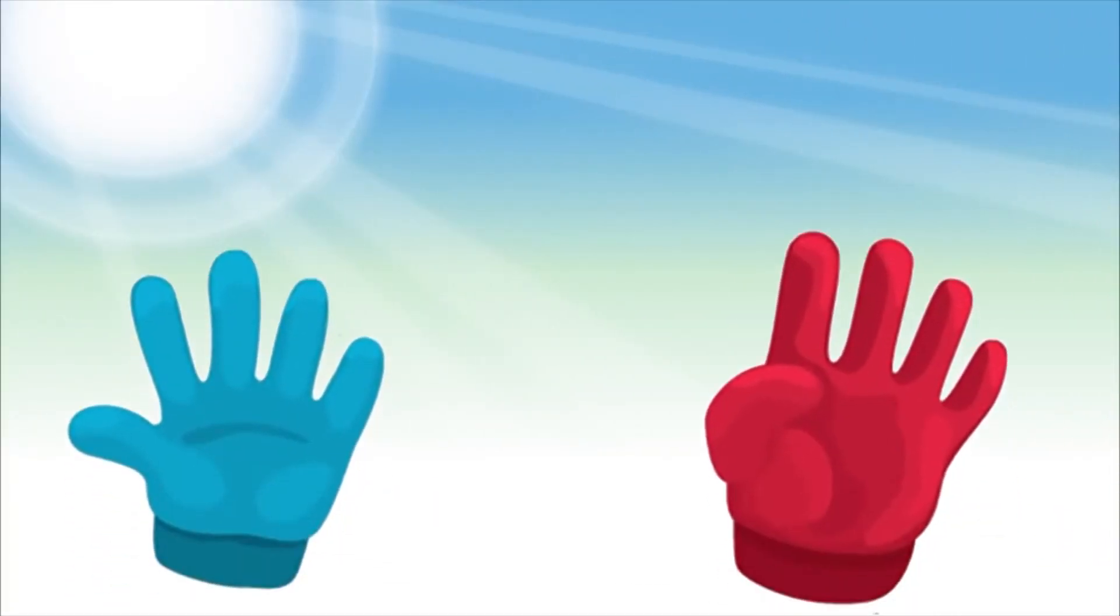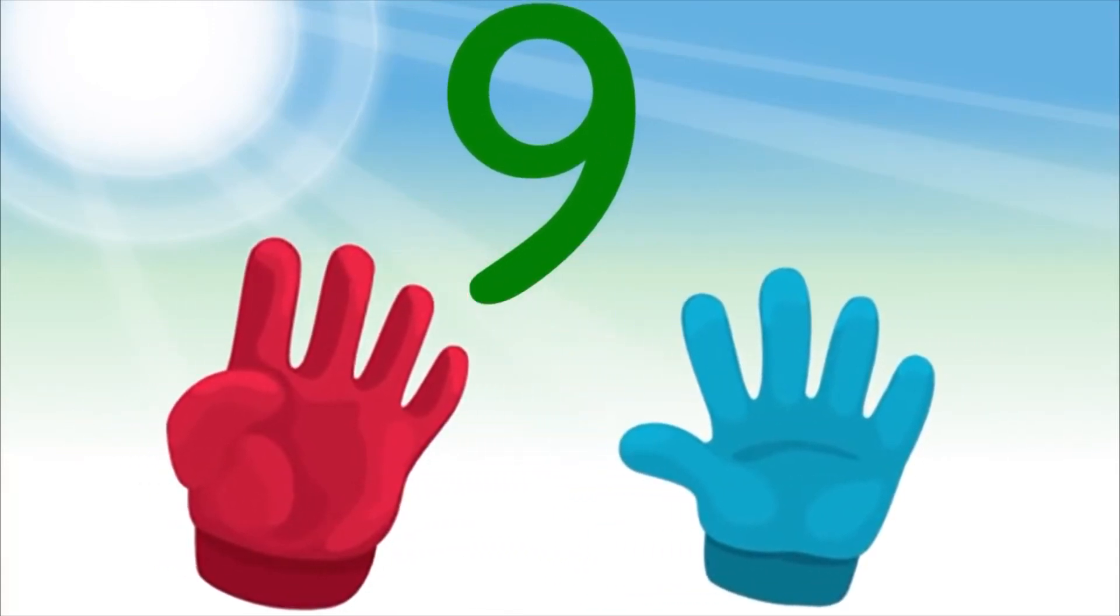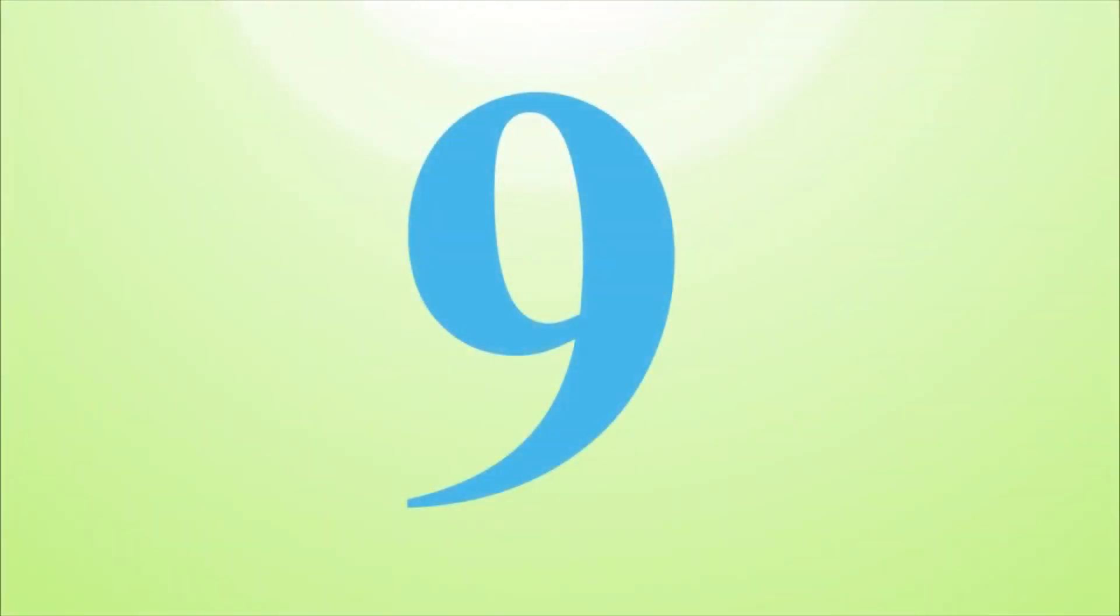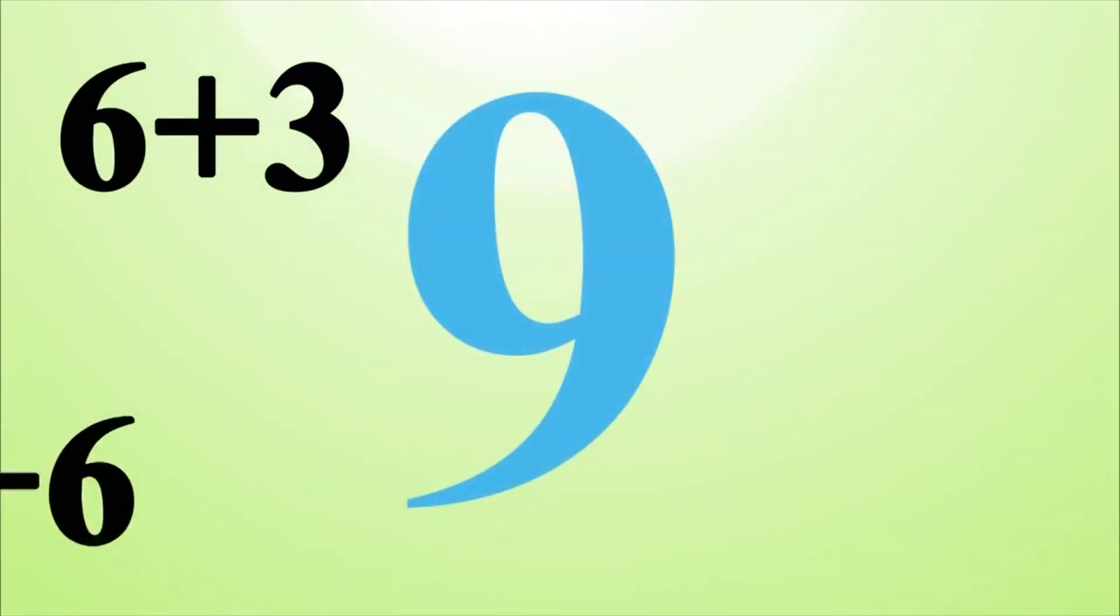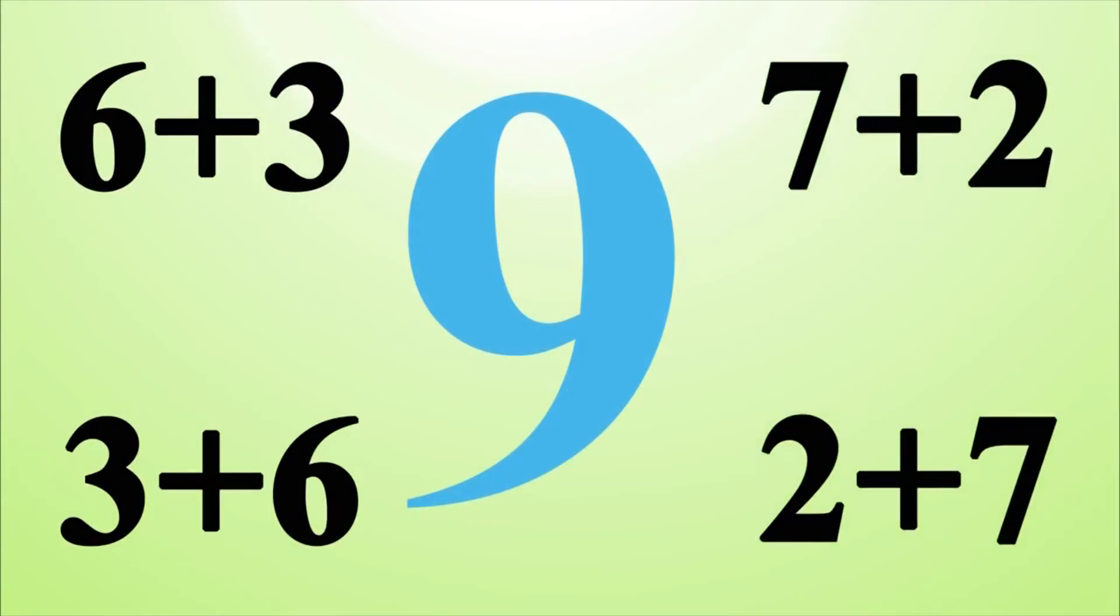If we add four to five, we get nine. And vice versa, four plus five is nine. And nine is six plus three, three plus six, seven plus two, and two plus seven.